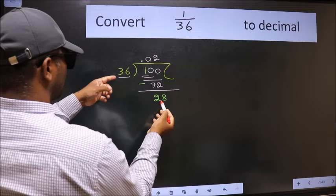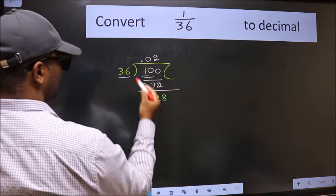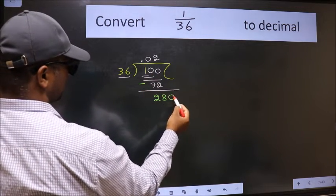We get 28. 28 is smaller than 36, and we already have the decimal, so directly take 0.